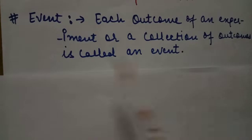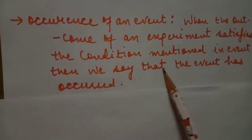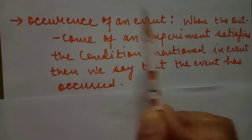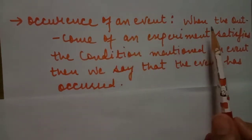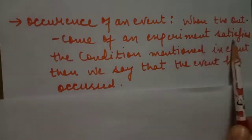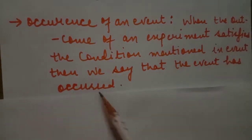An event is each outcome of an experiment or a collection of outcomes. When we perform an experiment, the collection of all possible well-defined outcomes is called an event. Occurrence of an event: when the outcomes of an experiment satisfy the condition mentioned in the event, we say that the event has occurred.